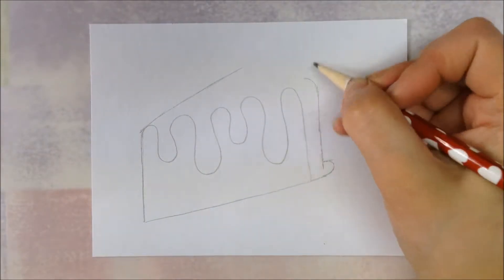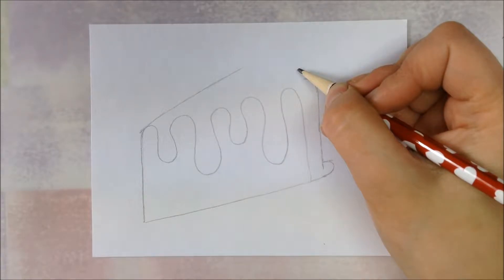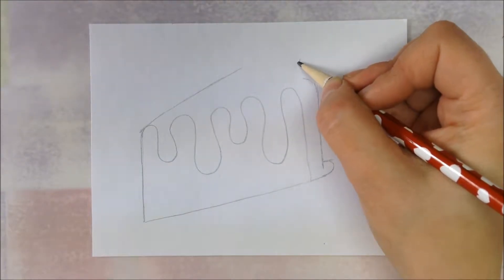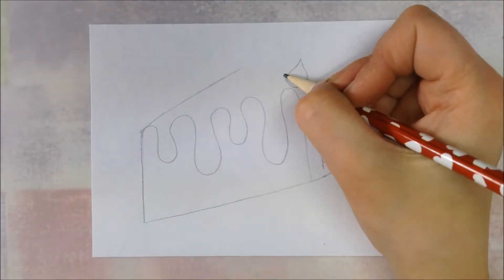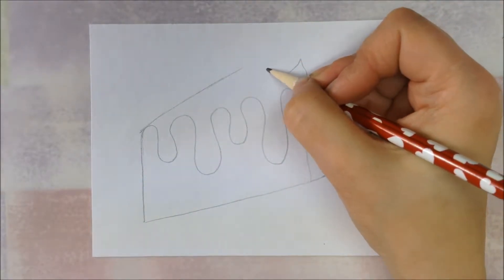I'm going to curve up at the top, and now I'm going to draw little dollops of icing. I'm going to draw one, and then instead of drawing another one, I'm going to draw a little green pineapple top.